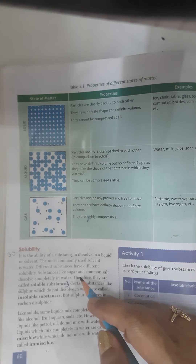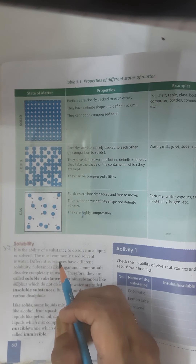Materials are classified on the basis of common properties like solubility, magnetic property, thermal conductivity, transparency, lustre, roughness, and floating or sinking. Now, solubility of solids in liquids: it is the ability of a substance to dissolve in a liquid or solvent. The most commonly used solvent is water. Different substances have different solubility. Substances like sugar and common salt dissolve completely in water — therefore they are called soluble substances.